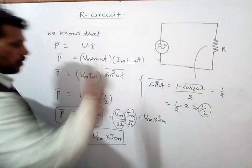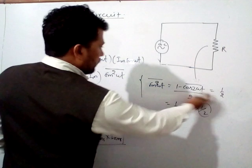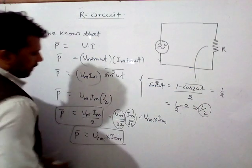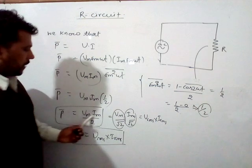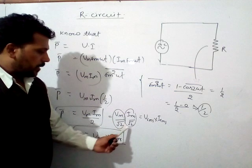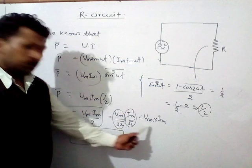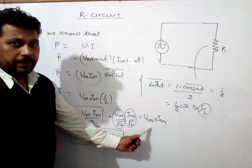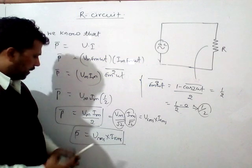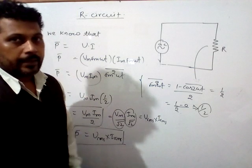The average value of sin²(ωt) is 1/2, so the average power equals Vm times Im divided by 2. This can also be written as (Vm/√2) times (Im/√2), so P-bar equals Vrms times Irms.